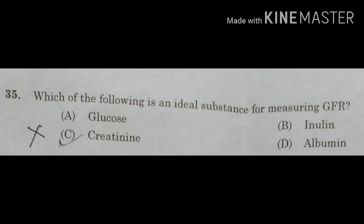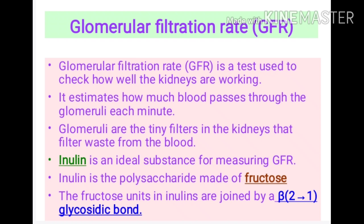The question is: which of the following is an ideal substance for measuring GFR? Options: A: glucose; B: inulin; C: creatinine; D: albumin. GFR stands for glomerular filtration rate — a test used to check how well kidneys are working. It estimates how much blood passes through the glomeruli per minute. Glomeruli are tiny filters in the kidneys that filter waste from the blood. The ideal substance for measuring GFR is the polysaccharide inulin.